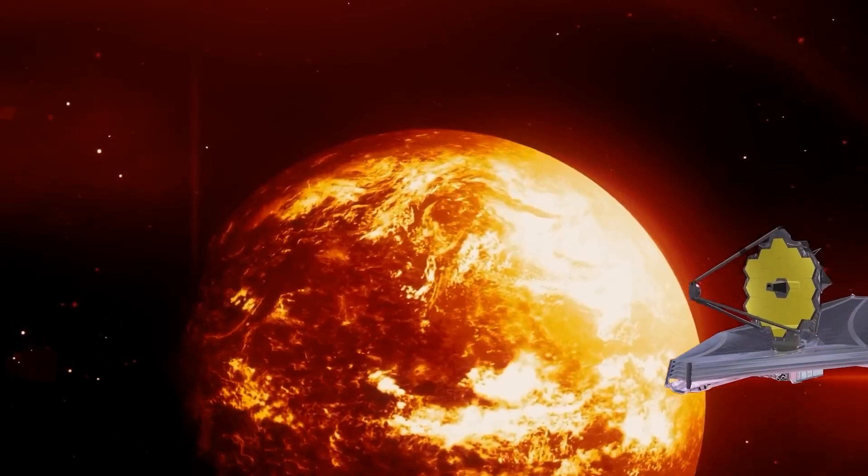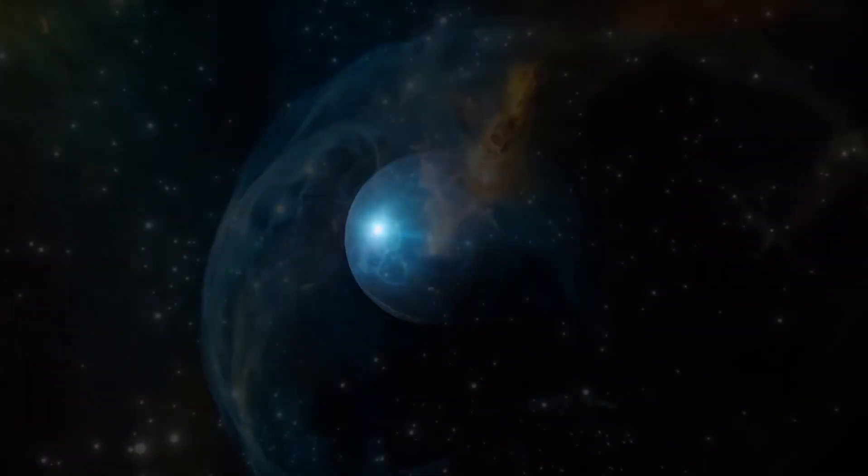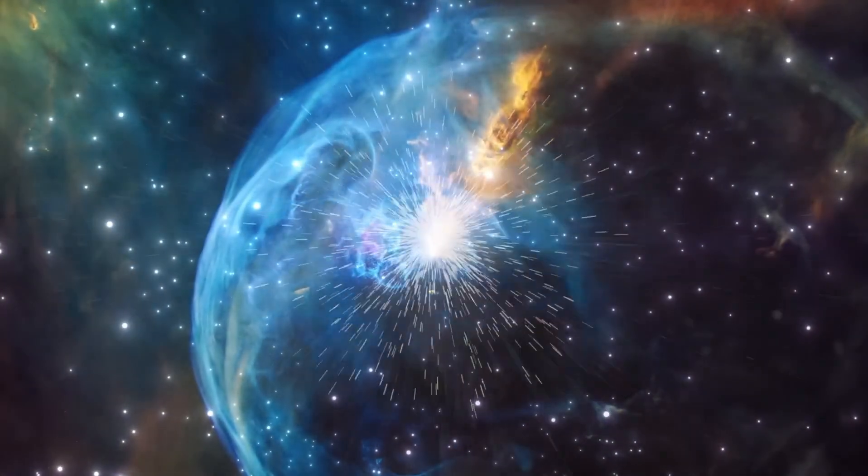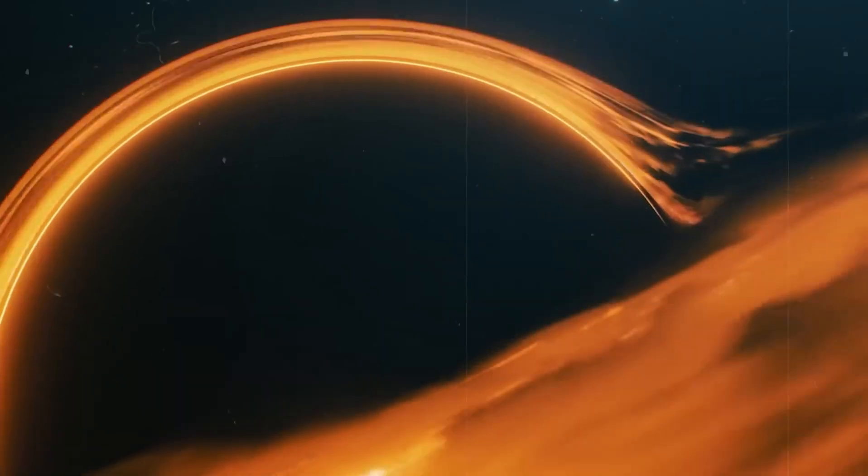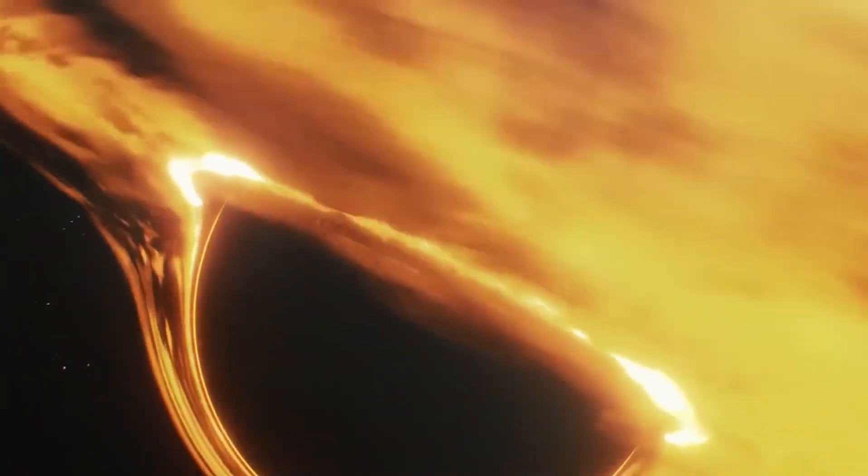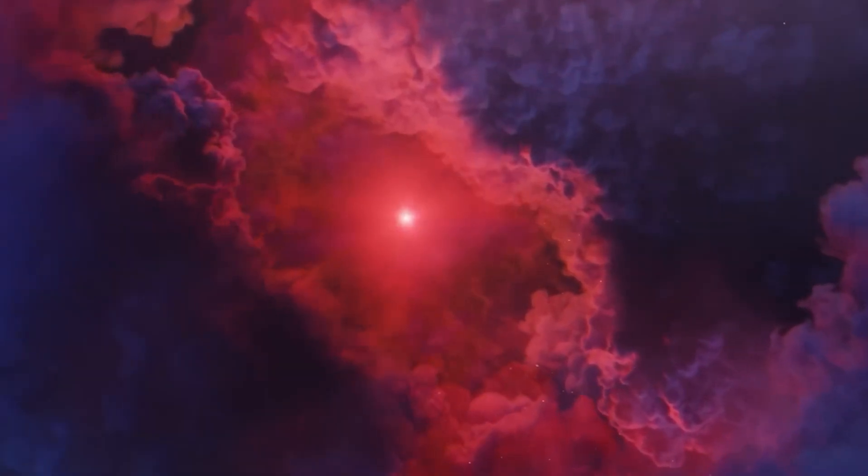By then, Voyager 2 had already been on its historic mission through the endless expanses of our galaxy for over a decade. The spacecraft succeeded in taking images of Neptune for the first time while simultaneously detecting six previously unknown moons in the direct vicinity of the planet.